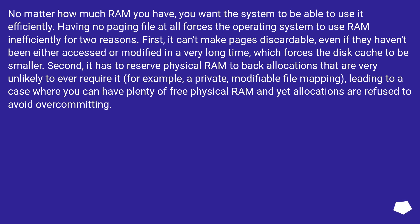Second, it has to reserve physical RAM to back allocations that are very unlikely to ever require it. For example, a private, modifiable file mapping — leading to a case where you can have plenty of free physical RAM and yet allocations are refused to avoid over-committing.